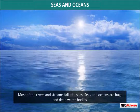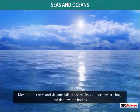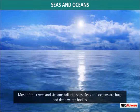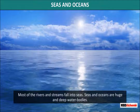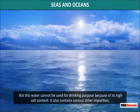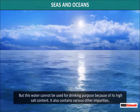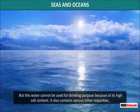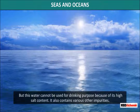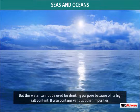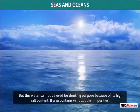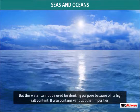Seas and oceans: Most of the rivers and streams fall into seas. Seas and oceans are huge and deep water bodies. But this water cannot be used for drinking purposes because of its high salt content. It also contains various other impurities.